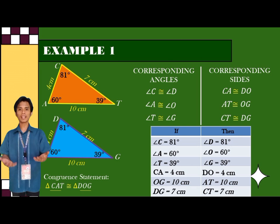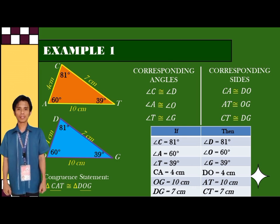The corresponding angles and sides of these two triangles are congruent. Therefore, the statement is triangle CAT is congruent to triangle DOG.